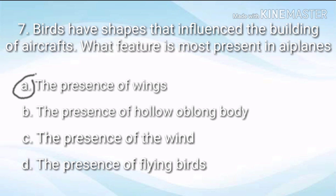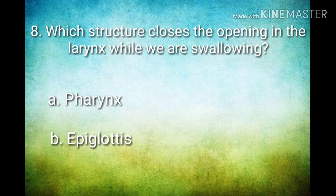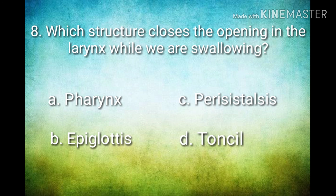For number 8: Which structure closes the opening in the larynx while we are swallowing? A pharynx, B epiglottis, C peristalsis, or D tonsil? The correct answer is B, epiglottis — the structure that opens in our throat when we are swallowing.